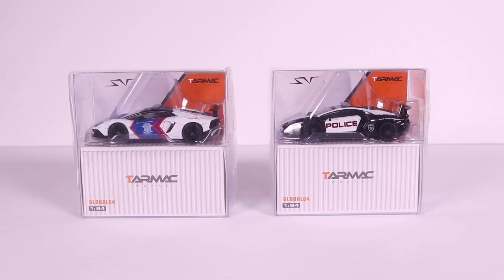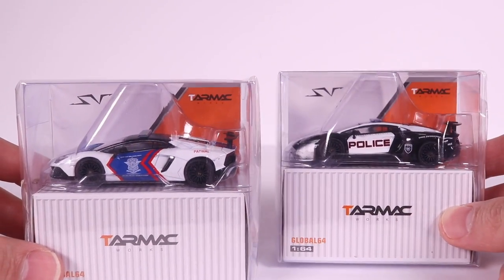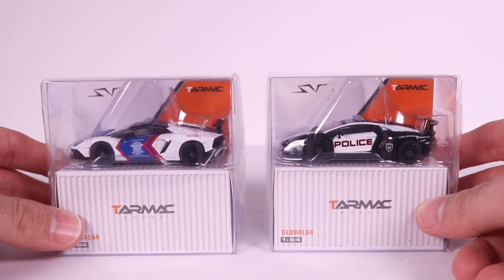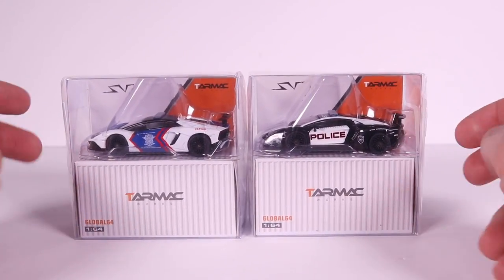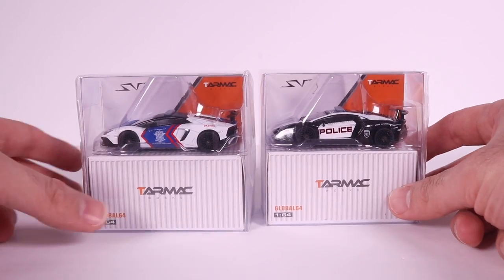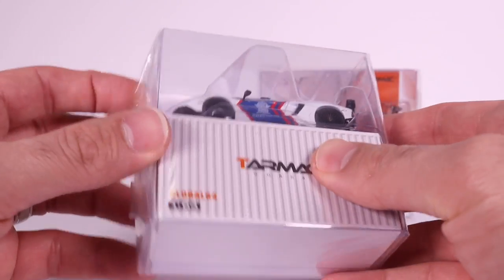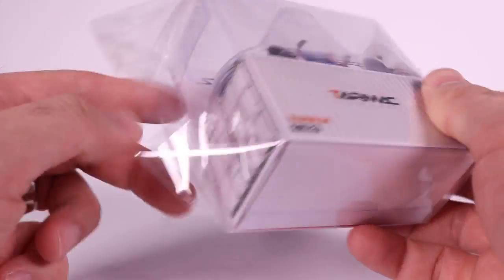All right, guys, here they are, the Tarmac Works Lamborghini Aventador police cars. Check them out, some great-looking police cars, and these are from a somewhat newer company, Tarmac Works. These cars cost you around the $8 mark US a piece, so let's go ahead and open these ones up and get some good detail on what these are all about.